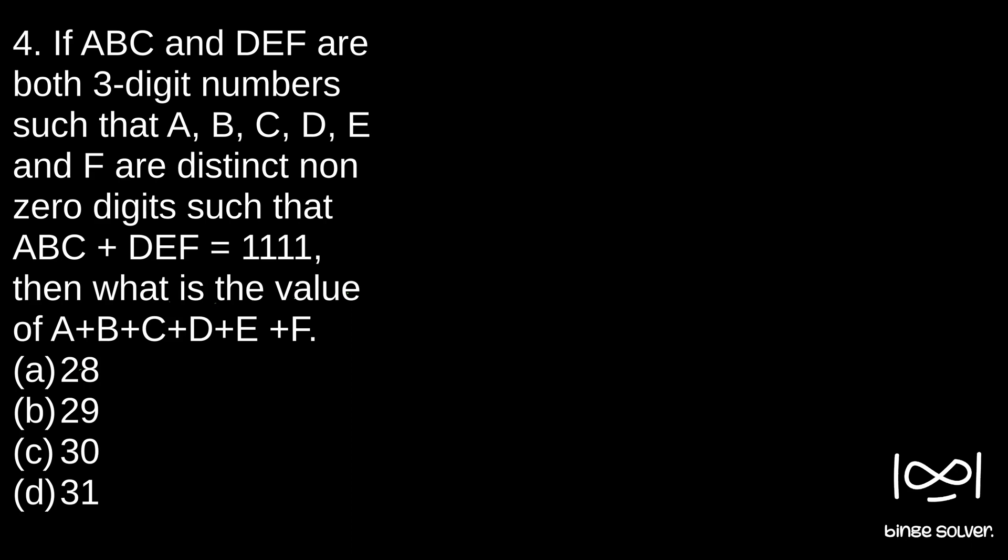If ABC and DEF are both three-digit numbers such that A, B, C, D, E and F are distinct non-zero digits such that ABC plus DEF equals 1111, then what is the value of A plus B plus C plus D plus E plus F?